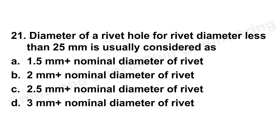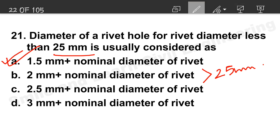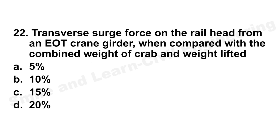Question 21: Diameter of a rivet hole for rivet diameter less than 25 mm. The correct answer is 1.5 mm plus the nominal diameter of the rivet. If the rivet diameter is greater than 25 mm, then it is 2 mm plus the nominal diameter.